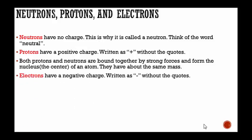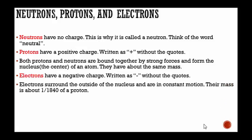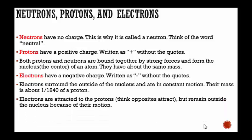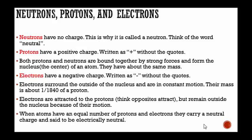Electrons have a negative charge, written as a negative sign. Electrons surround the outside of the nucleus of the atom and they are in constant motion, constantly moving around. Their mass is about 1/1840th of a proton. Electrons are attracted to the proton. Think opposites attract. They remain outside the nucleus because of their motion.